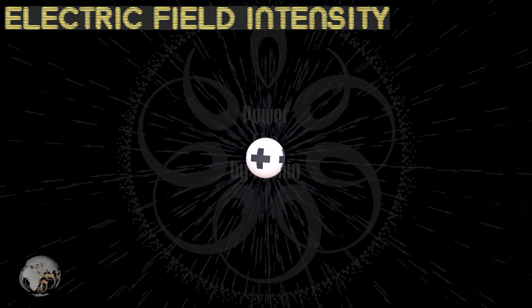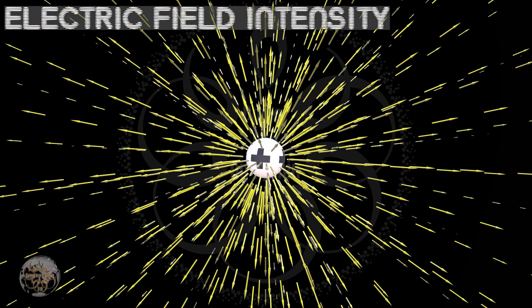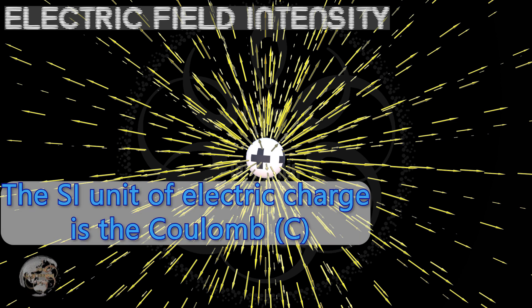On the screen, you can see a positive electric charge and the field vectors for that charge are drawn. The SI unit of electric charge is the coulomb.